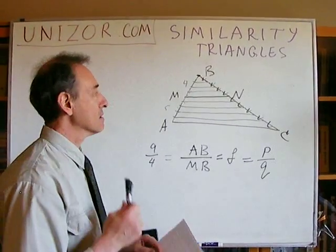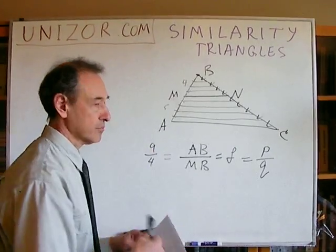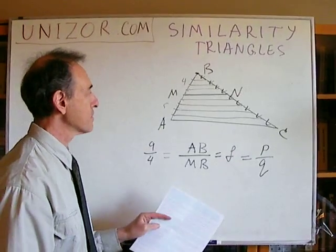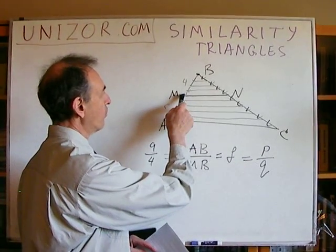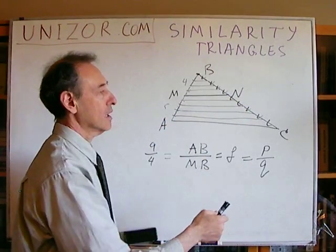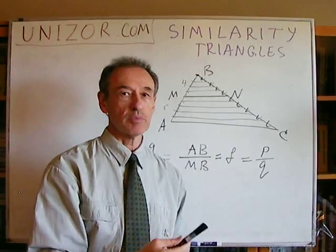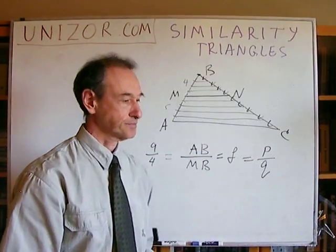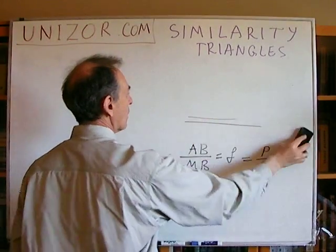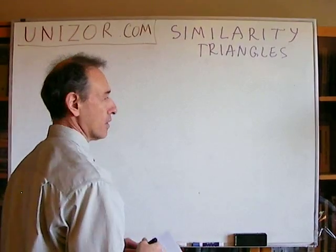And that's why I'm stating this particular lemma — this auxiliary theorem — that if you take any point on a triangle's side and draw a line parallel to the opposite side, you will cut from the top a triangle similar to the big one. We will use this lemma to prove our three theorems, each stating a sufficient condition for two triangles to be similar.